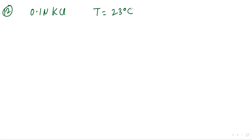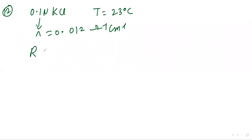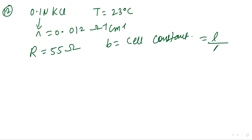Now look at the 12th sum, asked in 1999. The specific conductance of a 0.1 normality KCl solution at 23°C — conductance is given as 0.012 ohm⁻¹·cm⁻¹. The resistance of the cell of the solution at the same temperature is given as 55 ohm. You have to find the cell constant, which is represented by B and is given by length divided by area.